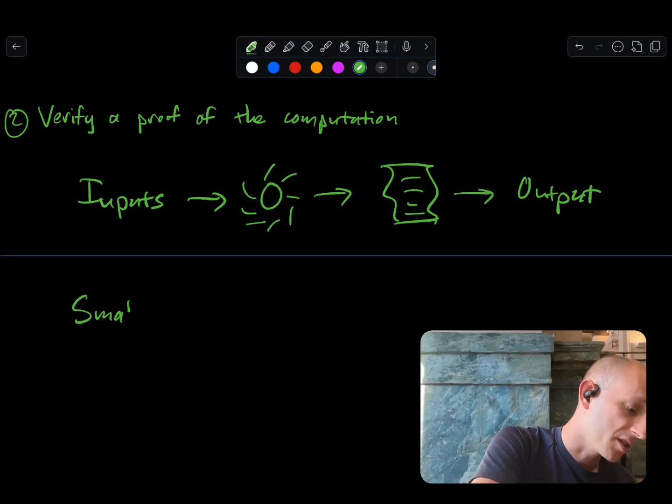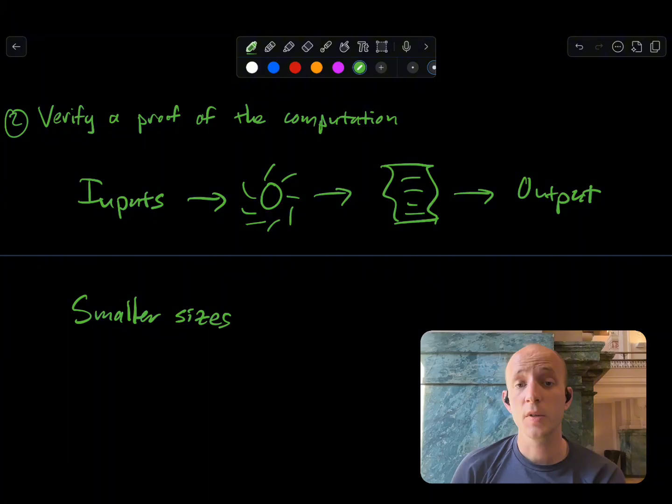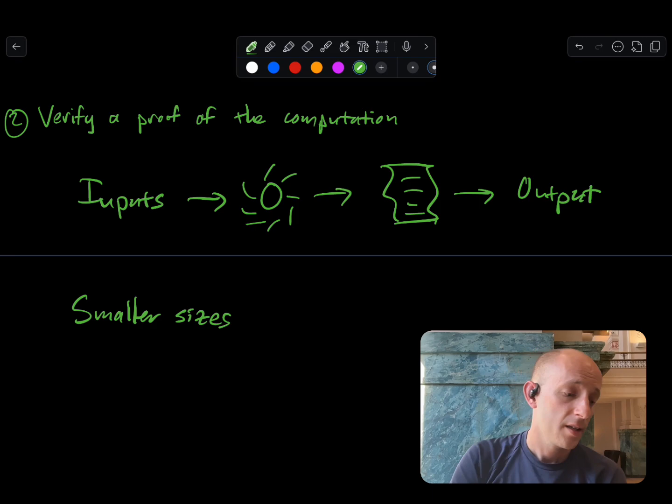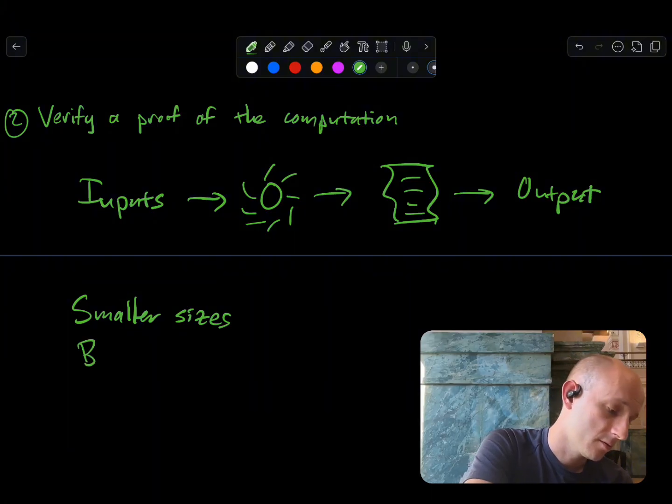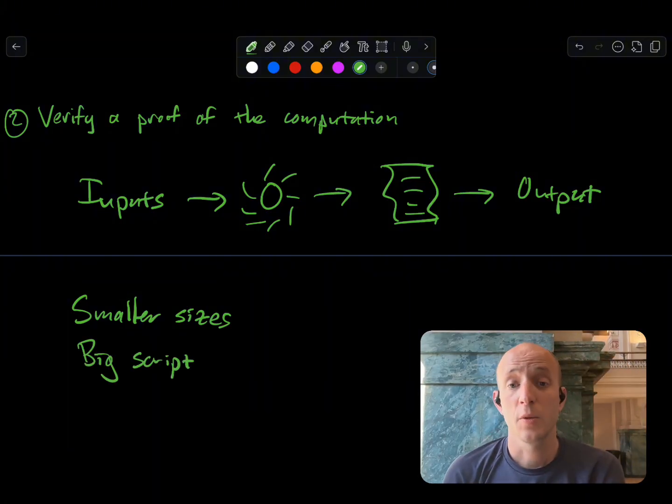One of the pros is that we can have smaller sizes. We still need to include some of our computation input on-chain, but the proof can be pretty small size and it has to go on-chain too. The downside, though, is that the verification script that looks at whether or not the proof is correct can still be quite big. So in practice, this doesn't really work for financial transactions either.